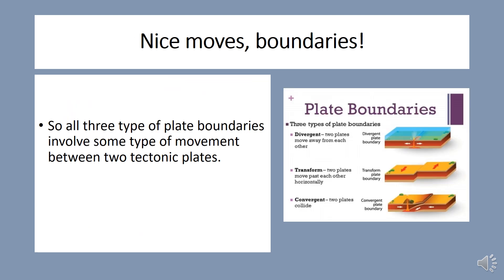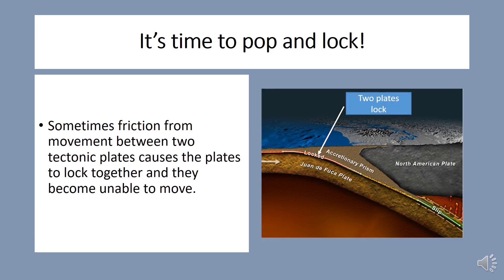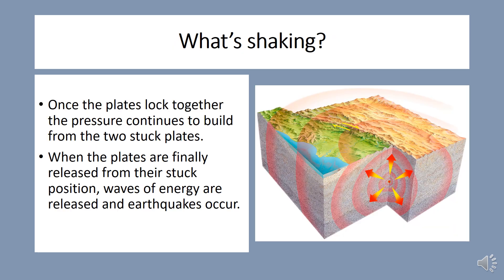So all three types of plate boundaries involve some type of movement between two tectonic plates. Sometimes friction from the movement between two tectonic plates causes the plates to lock together, and they become unable to move. Once the plates lock together, the pressure continues to build from the two stuck plates. When the plates are finally released from their stuck position, waves of energy are released and earthquakes occur.